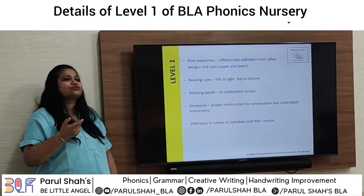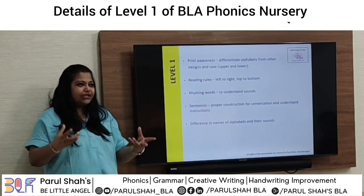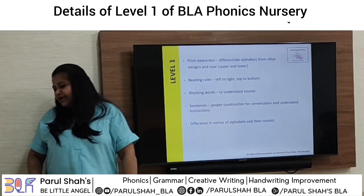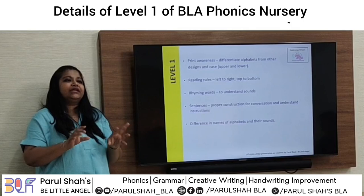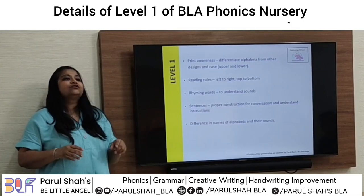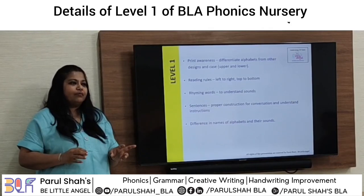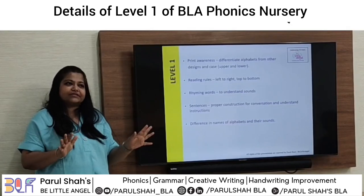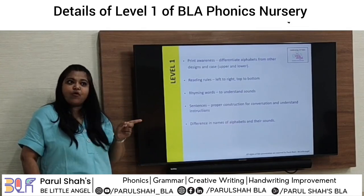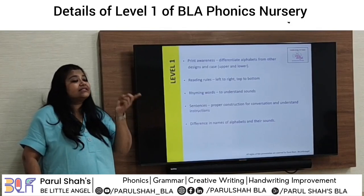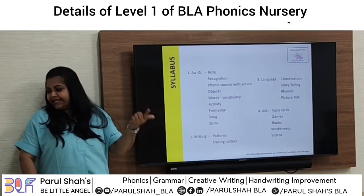Nursery children are too young to read, so we teach reading rules: left to right, top to bottom — the basics of how to read and write. We do rhyming words and sentences, but sentences are only verbal, so it is conversation in English — how to frame a sentence. They tell a story or a rhyme, and we understand the meaning. We relate sentences to festivals too. We also distinguish letter name from letter sound: when I say 'el' they understand it is the name; when I say the sound, they understand it is the sound.